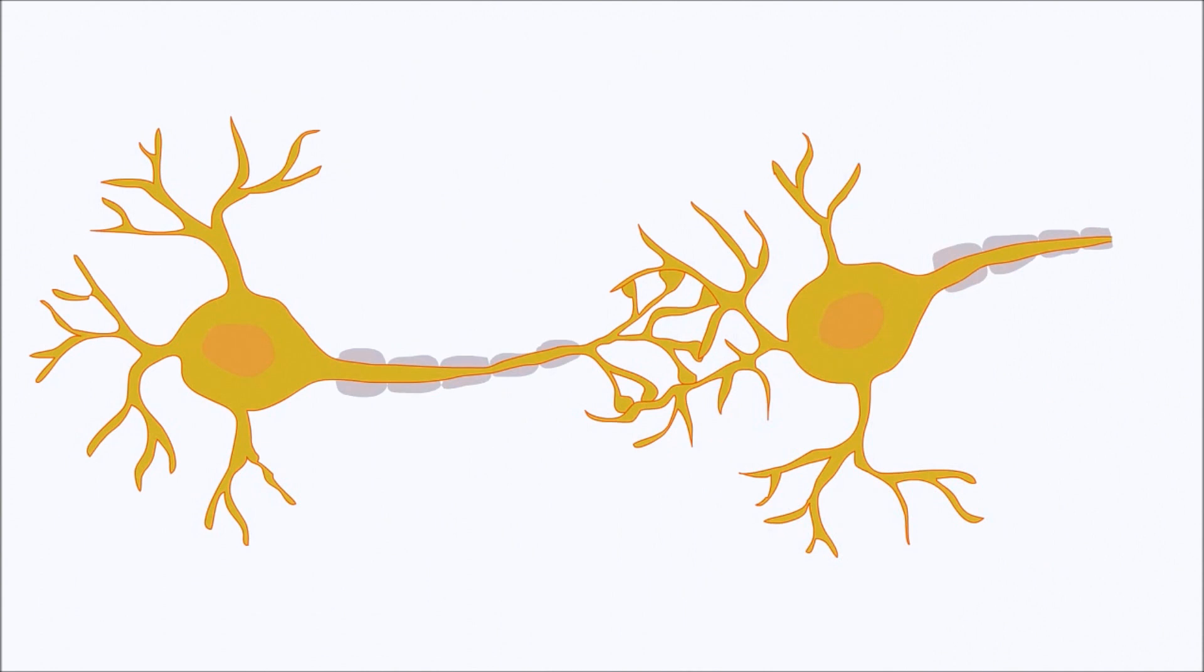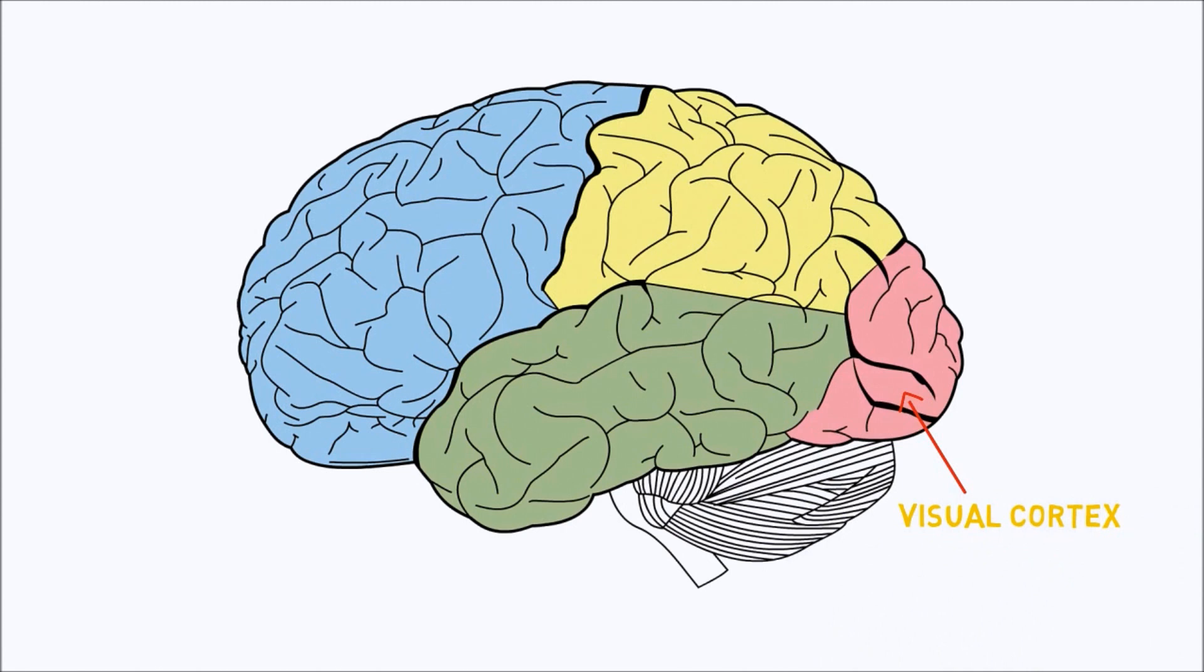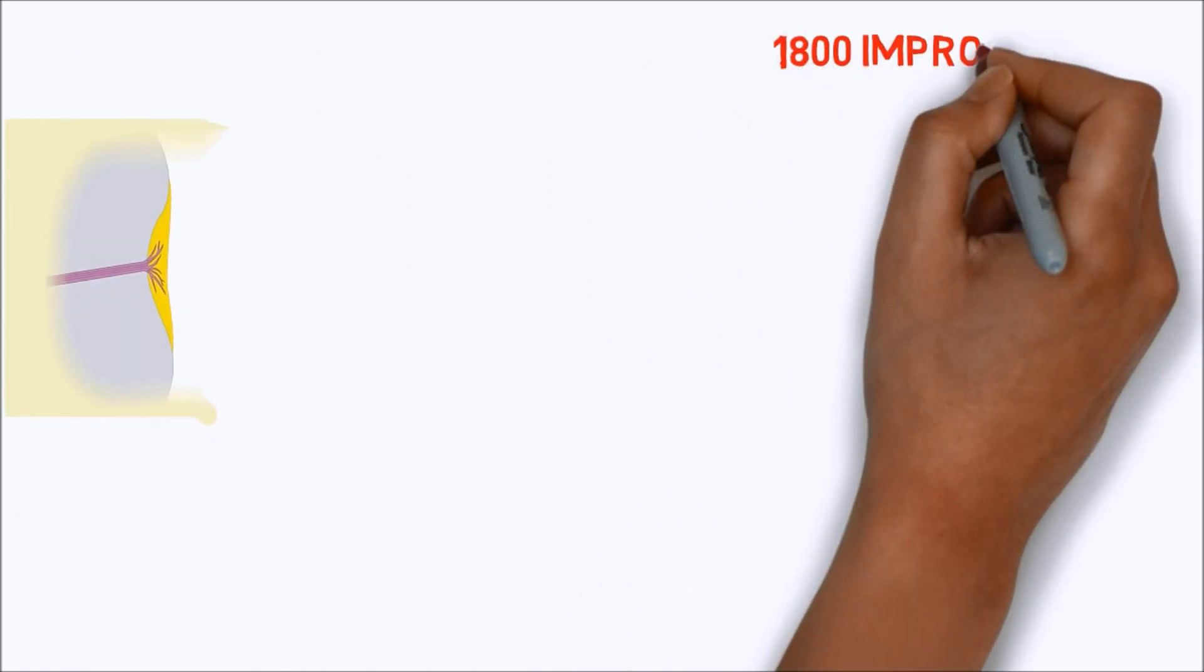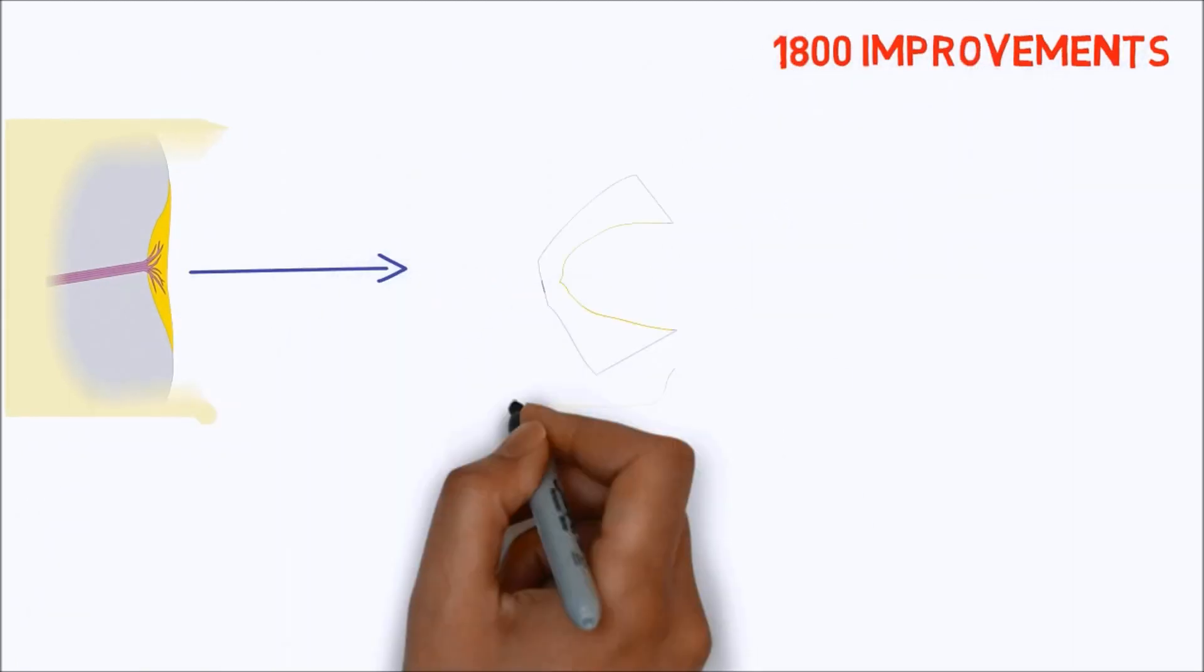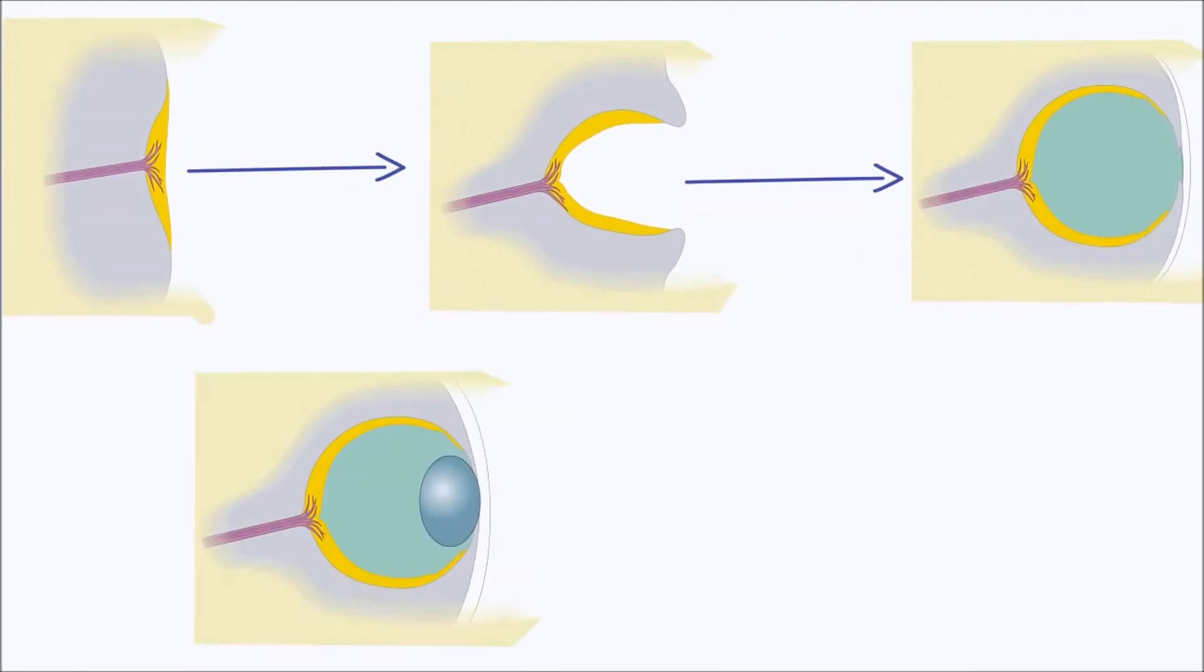The visual cortex in our brains evolved to process more sharper and colorful images. Starting with the flat light-sensitive patch, researchers gradually made over 1,800 tiny improvements, forming a cup, constricting the opening, adding a lens, until they had a complex image-forming eye.